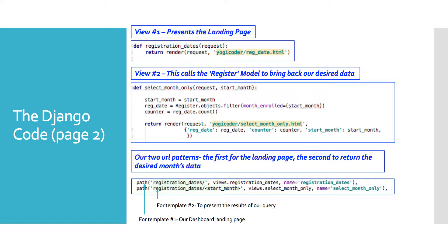View Number Two is where all the fun happens. This is the view that corresponds to the second page, bringing back detail once the user selects the month they want to see data on. It's called select_month_only and takes one parameter called start_month. The variable start_month is significant because when the user goes to the static URL, start_month is one of the variables that makes this a dynamic function.